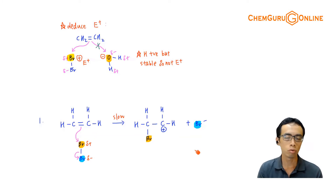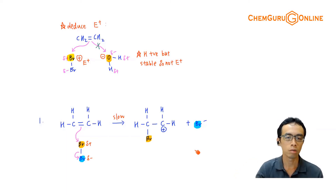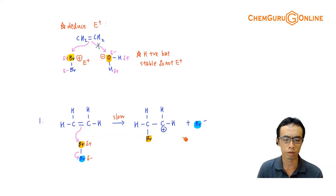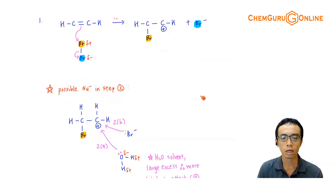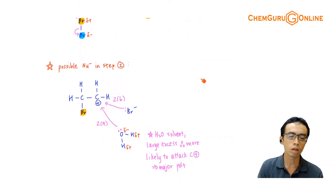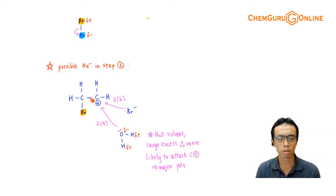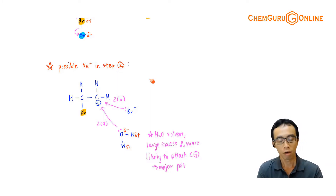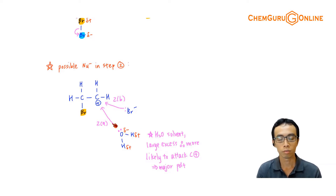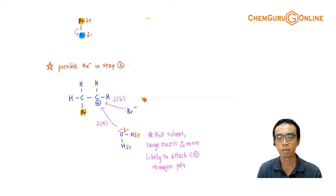Now in step number two, how do I show BrOH and how do I show the product involving BrBr? BrBr is obvious because carbon is a plus and Br is a minus - the minus will just join to the plus. But what we want to talk about is involving water, because now my intermediate is this carbocation - a positive charge. All the things that are nucleophilic or negatively charged can join to my C plus and form my product. So oxygen in water can come in and eventually give the major product.